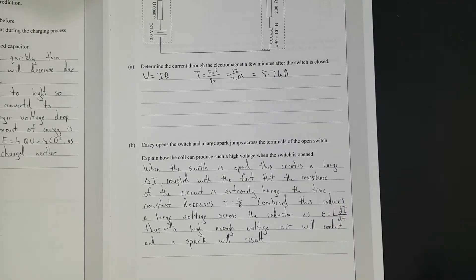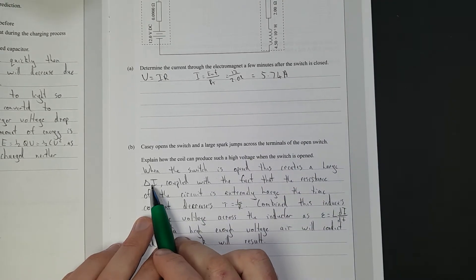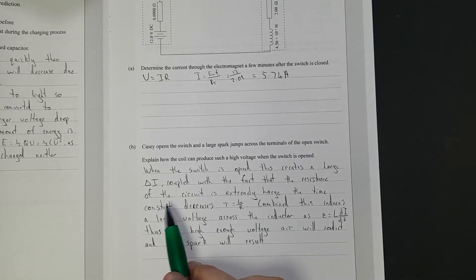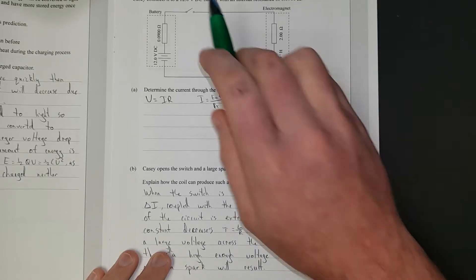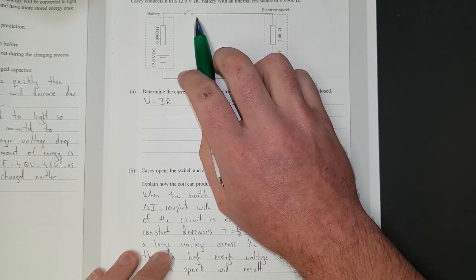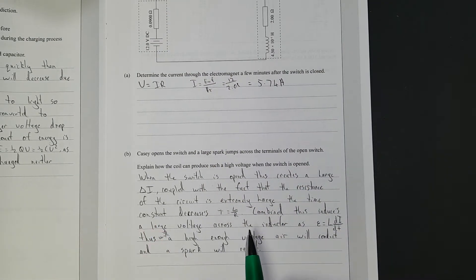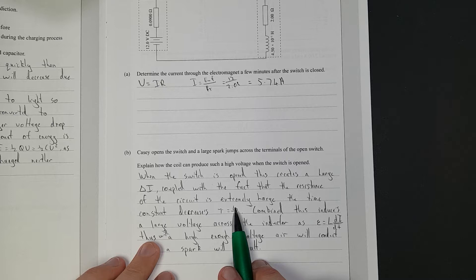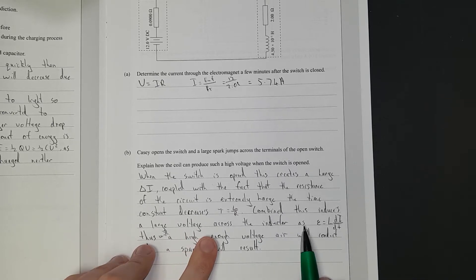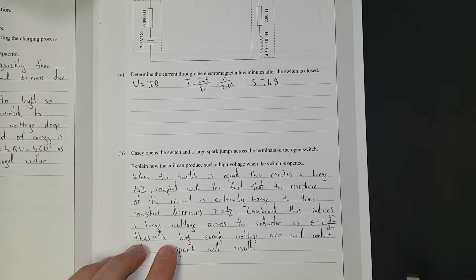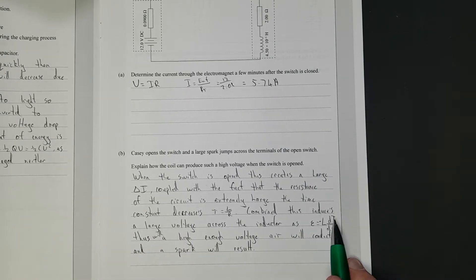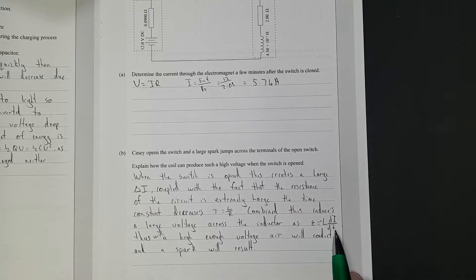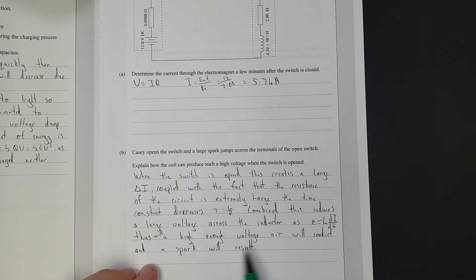So I've said when the switch is open, this creates a large change in current with the fact that the resistance of the circuit is extremely large. The time constant decreases because the time constant is just the inductance divided by the resistance. Combined, this induces a large voltage across the inductor as the EMF across the inductor is equal to the inductance times the change in current over change in time. Change in current is going real big, change in time is getting real small. Thus, with a high enough voltage, air will conduct and a spark will result.